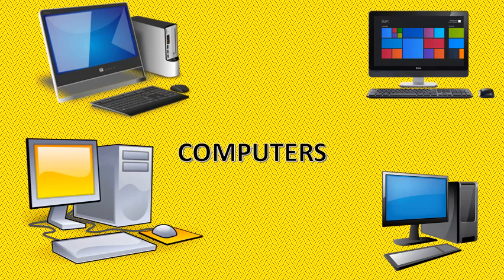Learner, let us now name some of the digital devices that we know. Give me three digital devices. I hope you have mentioned the following devices. One, a radio — we are communicating through a radio, and a radio is a digital device. Other digital devices include mobile phones, computers, laptops, television, smartwatch and even tablets. All these are digital devices.